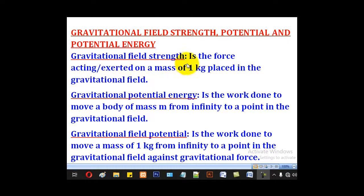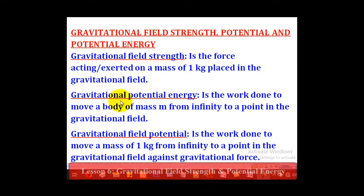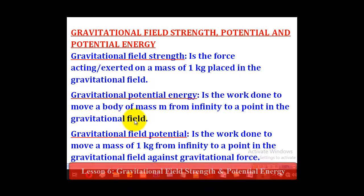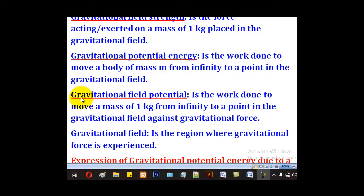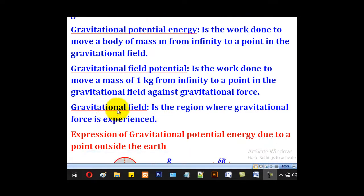Gravitational field strength is the force acting or exerted on a mass of 1 kg placed in the gravitational field. Gravitational potential energy is the work done to move a body of mass m from infinity to a point in the gravitational field. Gravitational field potential is the work done to move a mass of 1 kg from infinity to a point in the gravitational field against gravitational force — note that word 'against gravitational force'. And gravitational field is the region where the gravitational force is experienced.